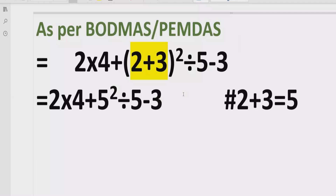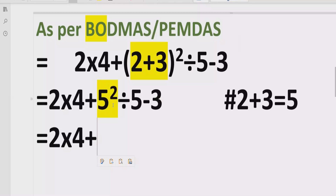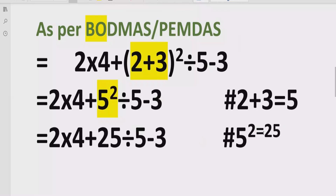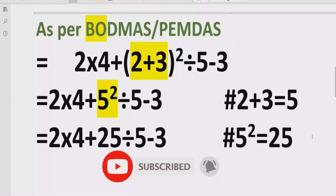Now move to step two: solve the exponent part. Here we have the exponent part which is 5 raised to power 2. So we solve 2 multiplied by 4, plus 5 raised to power 2 — meaning 5 multiplied by 5 — which equals 25, divided by 5, minus 3 written as it is. So 5 raised to power 2 equals 25.